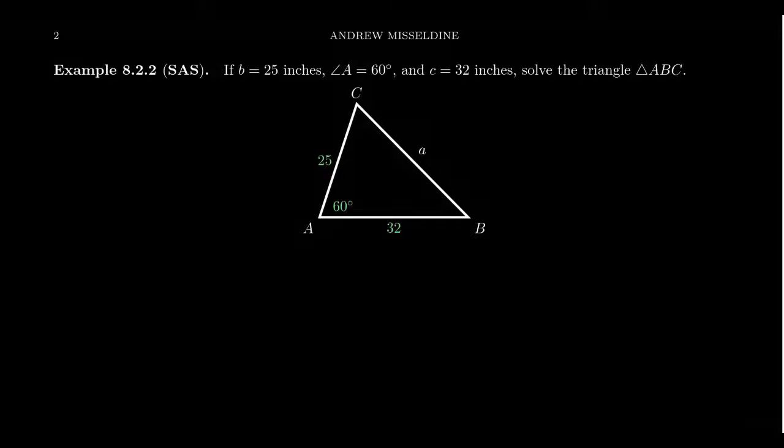In this video, we'll demonstrate how we can solve the side angle side condition using the law of cosines. Side angle side means that we know two sides of the triangle. Let's say we know side B and side C, which turn out to be 25 inches and 32 inches, and we know the angle that's interior to the two sides.